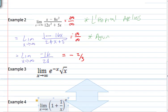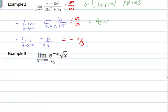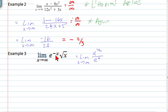Example 3: we have the limit as x approaches infinity of e to the negative x times the square root of x. It helps to rewrite this as the limit as x approaches infinity of x to the 1/2 over e to the x, since e to the negative x can be moved to the denominator. By direct substitution we have infinity over infinity — an indeterminate form.